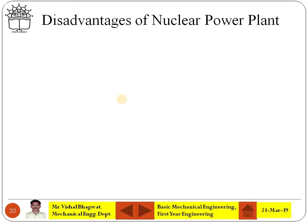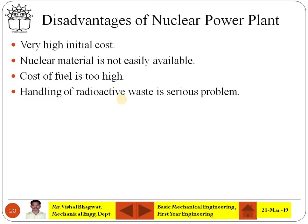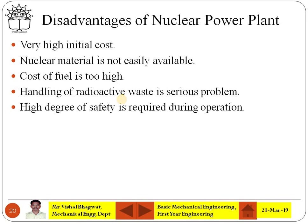The disadvantages of nuclear power plants are: very high initial cost, nuclear material is not easily available and is costly, and handling of radioactive waste is a serious problem because it generates X-rays, gamma rays, and many other radiations which may be harmful to operators. Hence a high degree of safety is required during operation, and the operator must be skilled and know how to use the equipment and safeguard themselves.